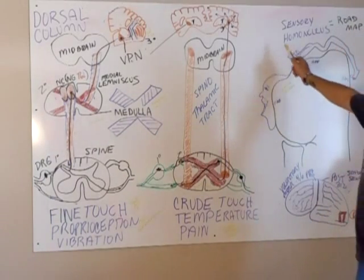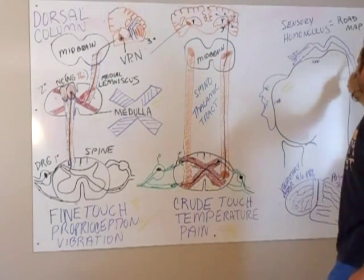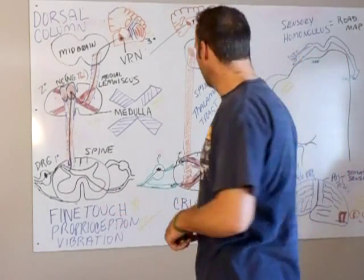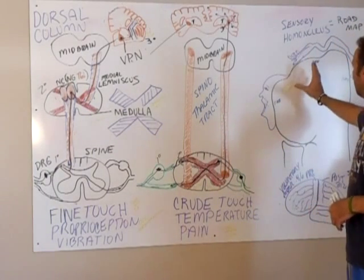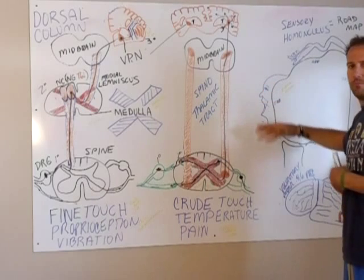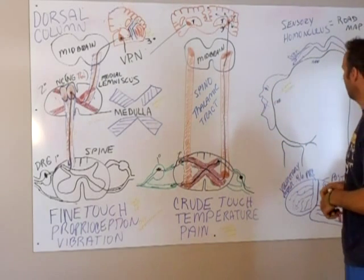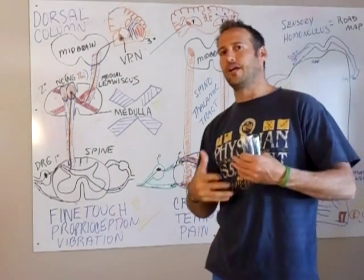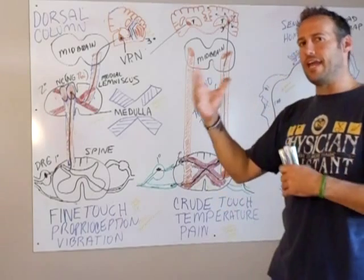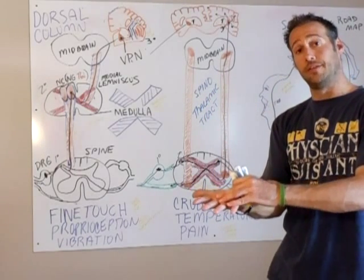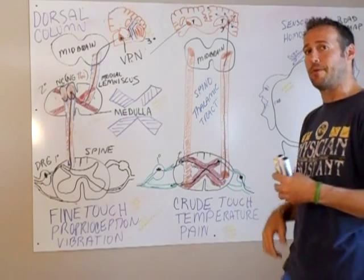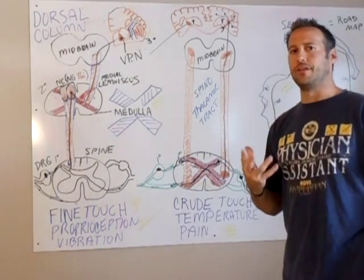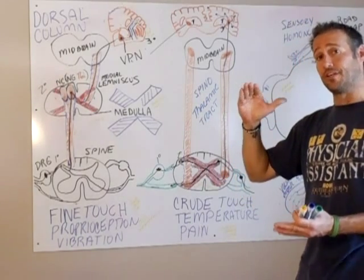On top of the cerebral cortex you'll come across something called the sensory homunculus. This is basically a road map of the brain showing how certain brain areas tie into picking up data from other areas of the body. For example, the face and the hand take up a large area — why? Because it's about the number of sensory receptors, not the physical size of the body part. The tongue, face, and salivary glands are highly innervated, so they take up a larger portion of the sensory homunculus.